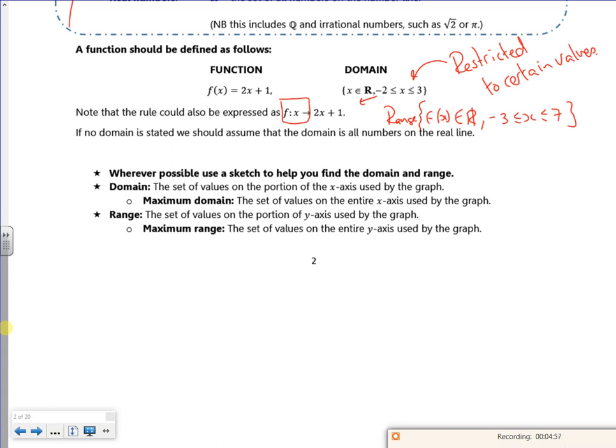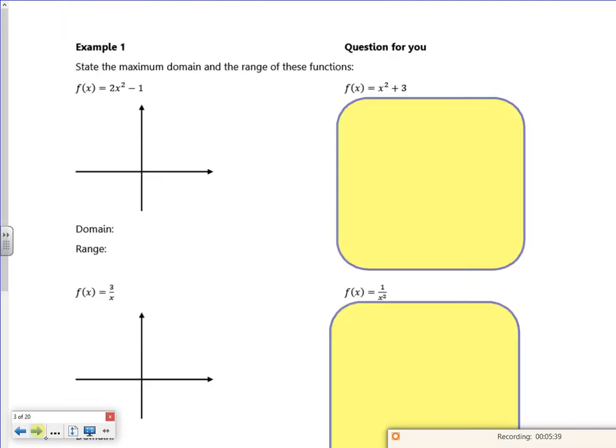Wherever possible, always do a sketch. Use your calculator to draw it, it helps you because you might get caught out. I just subbed in the minus 2 and the 3 into the equation, but it might actually dip down lower than the y values I've got, so you've got to be careful. The domain is a set of values on the portion of the x-axis used by the graph. The maximum domain is everything. The range is a set of y values from a portion of the y-axis, or the maximum range is all of them.